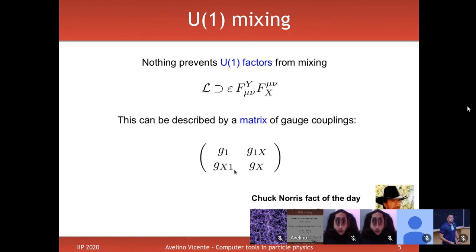In practice, you don't have to worry about this mixing — it is already implemented. You will have two additional parameters G1X and GX1 in your Lagrangian. You don't need to define them explicitly; they appear because they are gauge invariant and allowed by all symmetries. This was something I wanted to clarify from the first lecture.